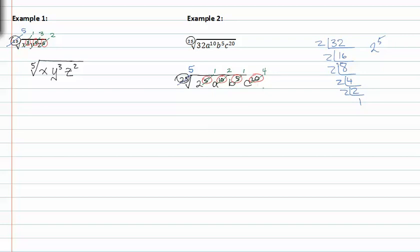Now that I've reduced that common factor, I can rewrite my radical with those reduced values. My index is now five, I now have two to the first, a to the second, b to the first, and c to the fourth. And that's my final answer.